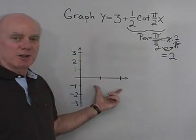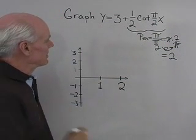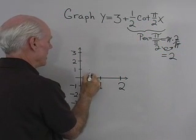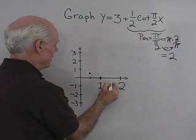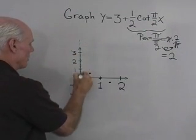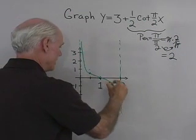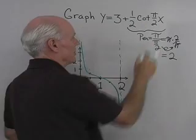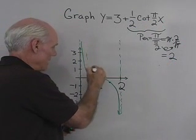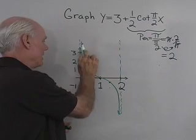I'll label the x-axis with 2 and 1. For the cotangent, at the quarter-period position the value would normally be 1, but since I'm multiplying by ½, it's going to be ½. The graph will go through 0 at the midpoint, and be negative ½ on the other side, with asymptotes at the edges. Let me draw in the asymptote here and another one over here. My cotangent graph should look something like this — that's ½ cot(πx/2).